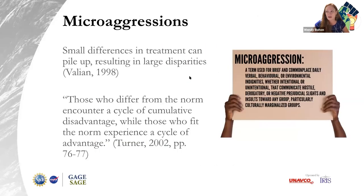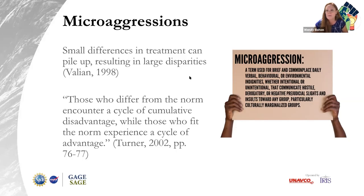Microaggressions are common, everyday occurrences — usually done unintentionally — but they're verbal, behavioral, or environmental indignities that are negatively prejudicial and insulting towards a group, particularly culturally marginalized groups. The problem is that these small differences in treatment really pile up, resulting in large disparities — you can think about it like death by a thousand cuts. They're so frequent that those who differ from the norm encounter this cumulative disadvantage through time, whereas those who fit the norm experience a cycle of advantage.